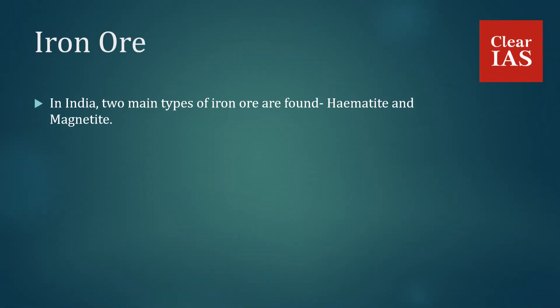Iron ore: in India, two main types of iron ore are found — hematite and magnetite. Hematite is a superior quality of iron ore which consists of almost 70% iron content. Also, the relatively lower grade of iron ore, i.e., limonite, which consists of 40–60% iron content, is also present in our country.